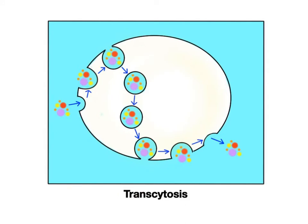Transcytosis is another vesicular transport process where chemicals are brought into a cell through endocytosis, transported across the cell in vesicles — the prefix trans means across or through — and then are released out of the cell through exocytosis. Transcytosis summarizes the whole journey of a chemical as it passes through a cell. Endothelial cells are good examples of cells that carry out lots of transcytosis. These are the thin epithelial cells that line blood vessels and allow larger chemicals such as antibodies to cross the cell membrane as they're moving between the blood plasma and interstitial fluid.